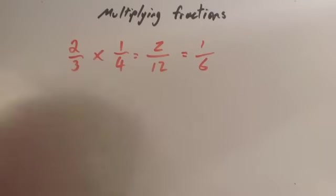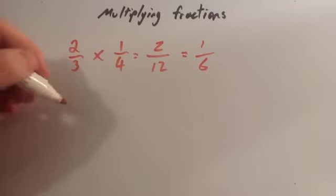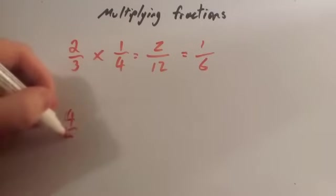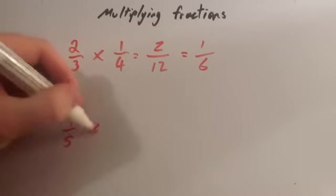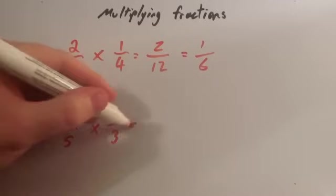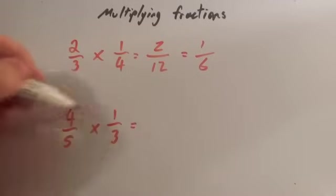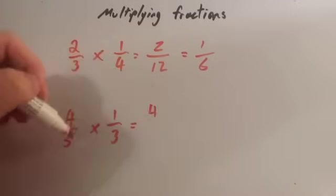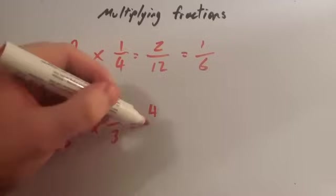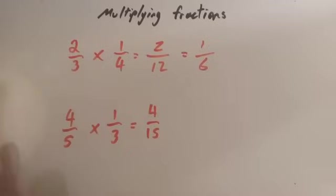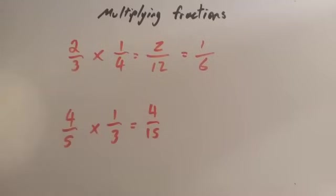Let's look at another example. If I had four over five multiplied by one over three, four times one is four, and five times three is fifteen. And that's it.